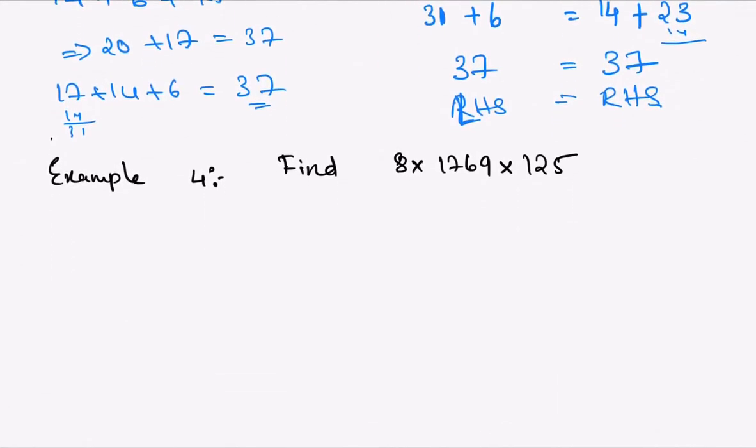In Example 4, they have given 8 × 125 × 1769. Which property can we use here? I can use the associative property to make my problem simpler. I can take this as (8 × 125) × 1769.